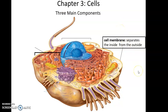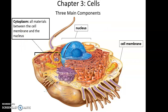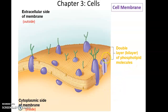The cell gets broken down into three main components. You have the cell membrane, which is the outermost structure that defines the shape of the cell and separates the inside from the outside. Then you have the nucleus, a large organelle that houses the DNA. Finally, everything that lies between the cell membrane and the nucleus is referred to as the cytoplasm — this includes fluids, things dissolved in the fluids, and all of the organelles.